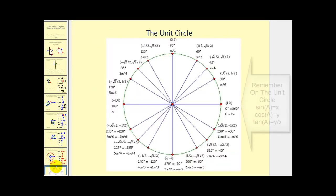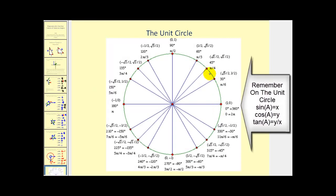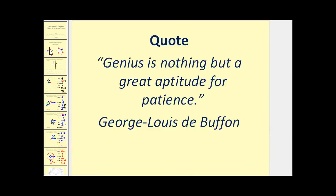The unit circle shows the coordinates for all common reference angles — 30, 45, and 60 degrees in all four quadrants — and you should keep one handy to speed up finding trigonometric function values. We went over quite a bit of information here, but hopefully you found it helpful. Have a good day.